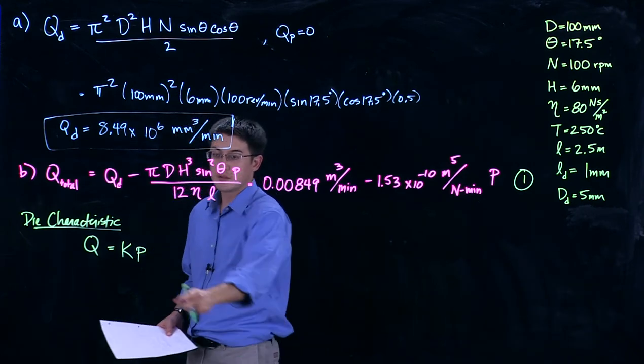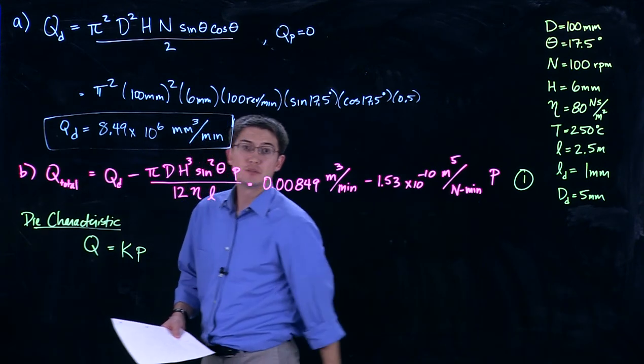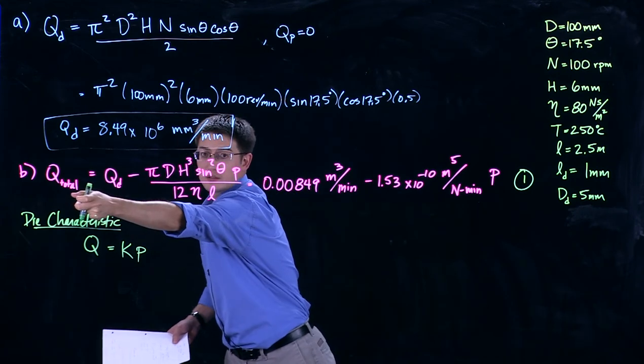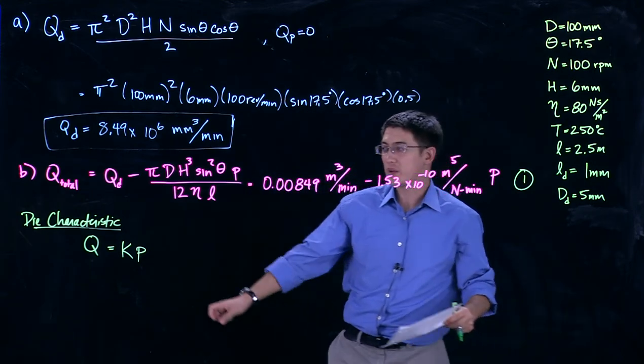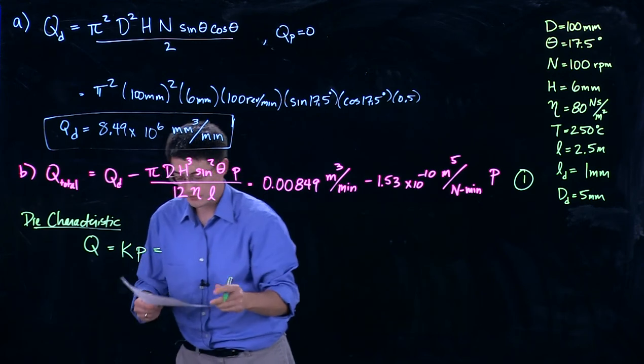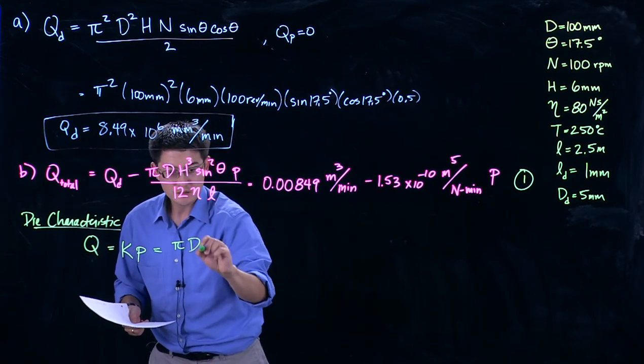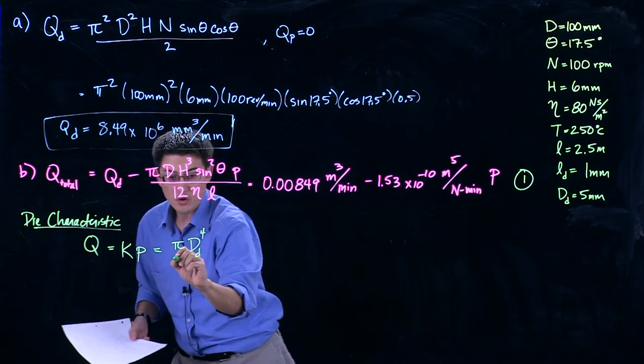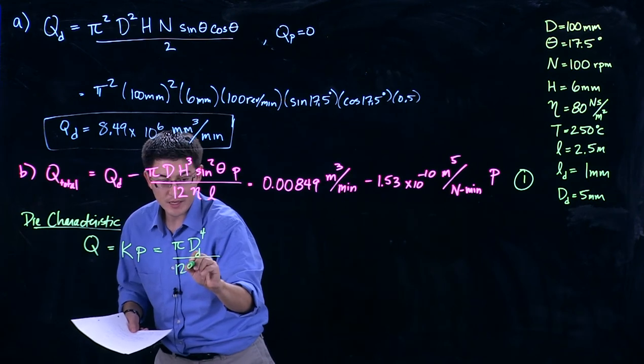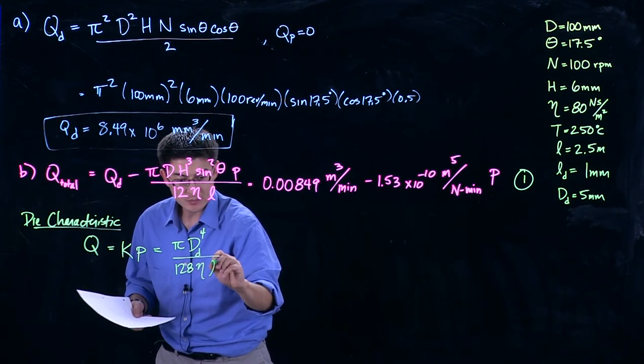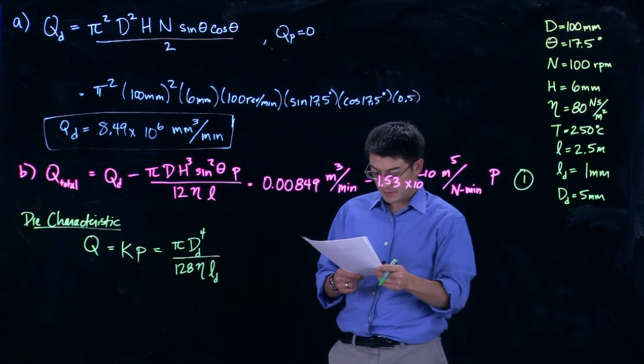We still don't know pressure, but the total flow through the die has to be the same as coming out of the extruder. So we can set this equal to this. This has a term with an unknown pressure. So does this, but we can set these two equal to one another. So we have an expression for K, which is pi diameter of the die to the fourth over, and remember this is for a round solid rod, 128 times the viscosity times the land of the die, the length of the die, times pressure.